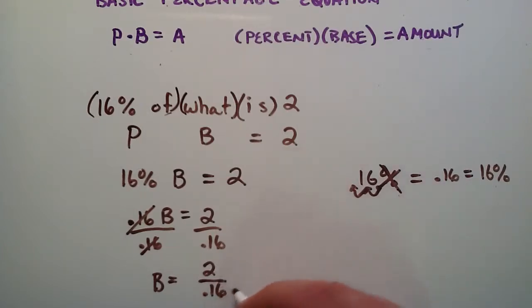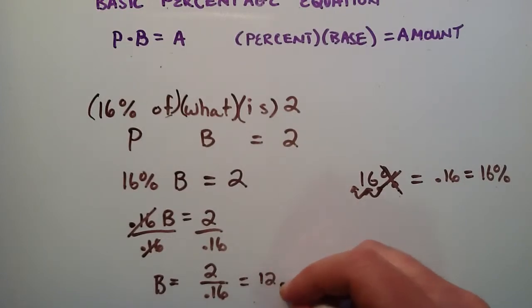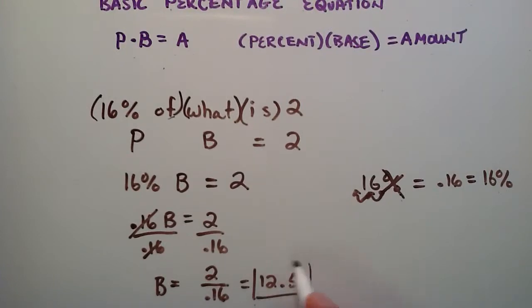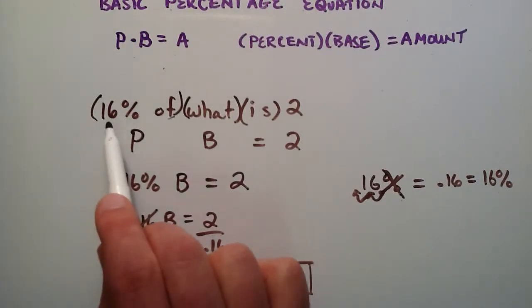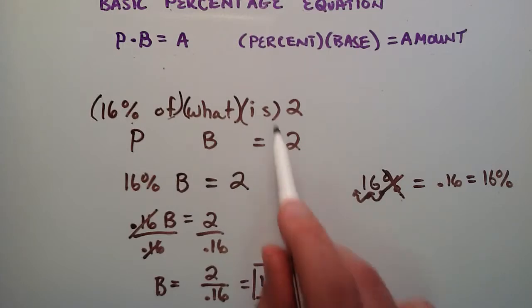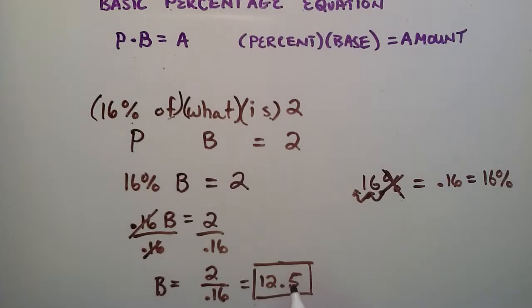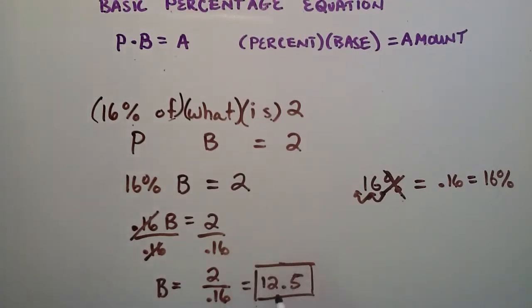Leaving us with B equals 2 divided by 0.16. We could spend some time to solve this, but I'm just going to say plug it into your calculator, and you'll find that it's equal to 12.5. That's our answer. So 16% of 12.5 is 2. This is our base number. If you take 16% of this number, you'll find it equals the value 2. You can actually plug that into your calculator. You can do 12.5 times 0.16, and it should give you the answer too.